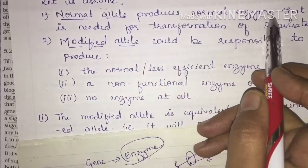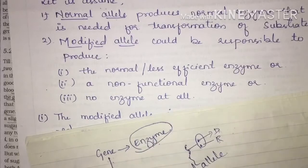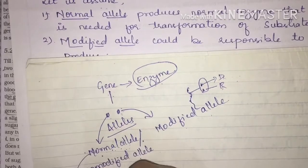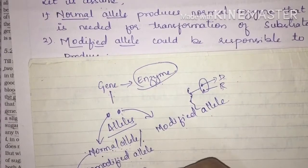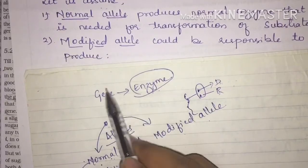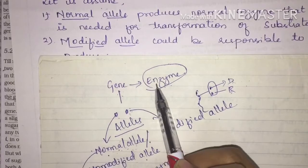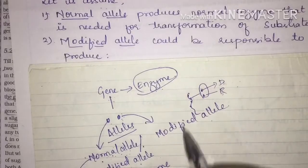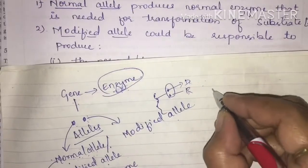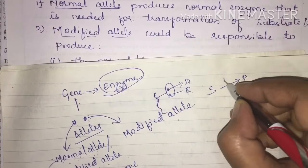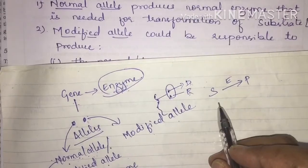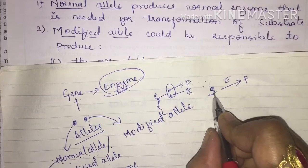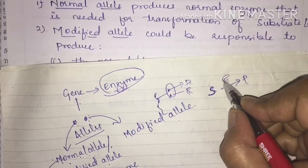The normal allele produces a normal enzyme, which is actually the function of the gene. This enzyme is needed for the transformation of substrate into product. As you know, an enzyme is used to convert substrate into product — just like in chemistry, reactants get converted into products with the help of an enzyme.